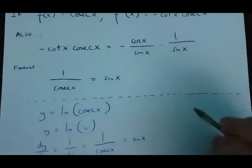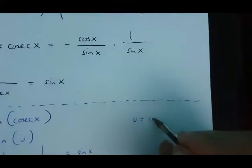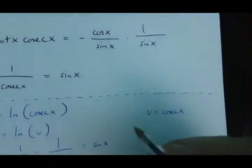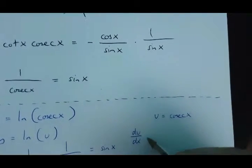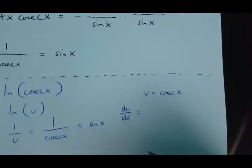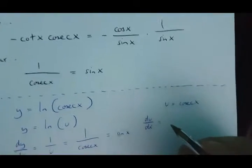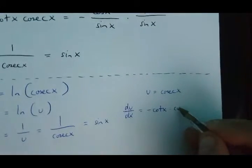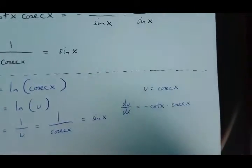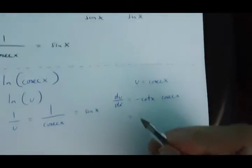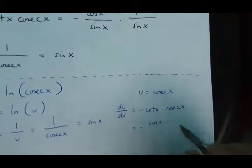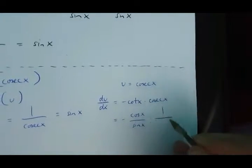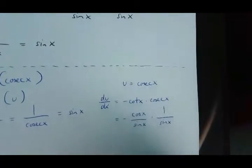Now, let's say that u is equal to cosec x. If this is the case, du/dx is going to be equal to minus cot x times cosec x.